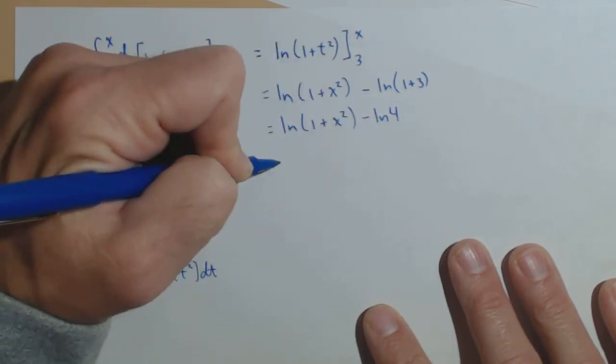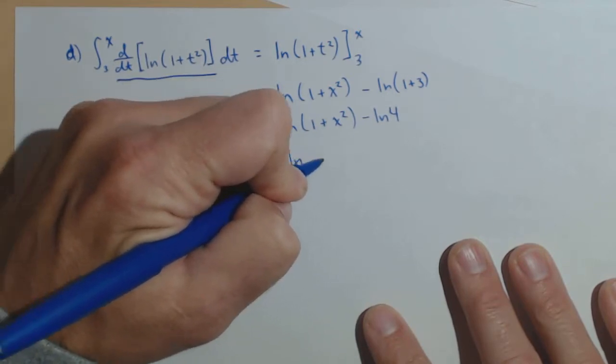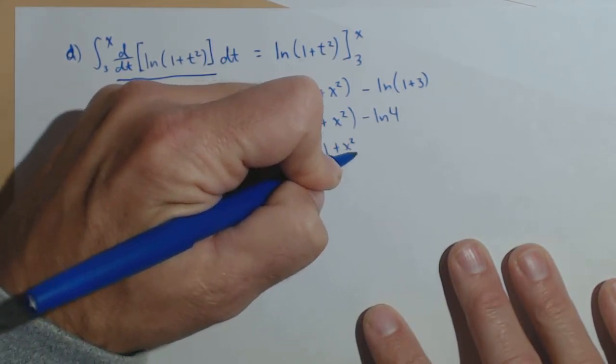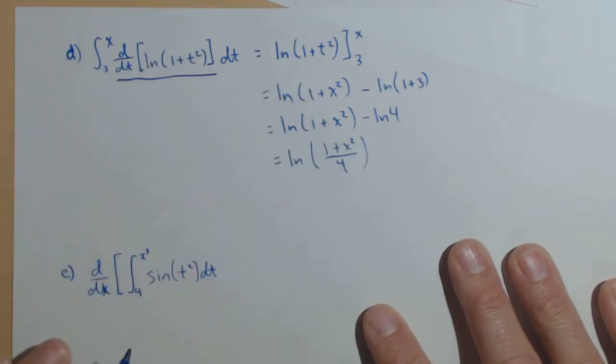or if we wanted to apply a property of logs, we could rewrite this as a single log. ln of one plus x squared over four.